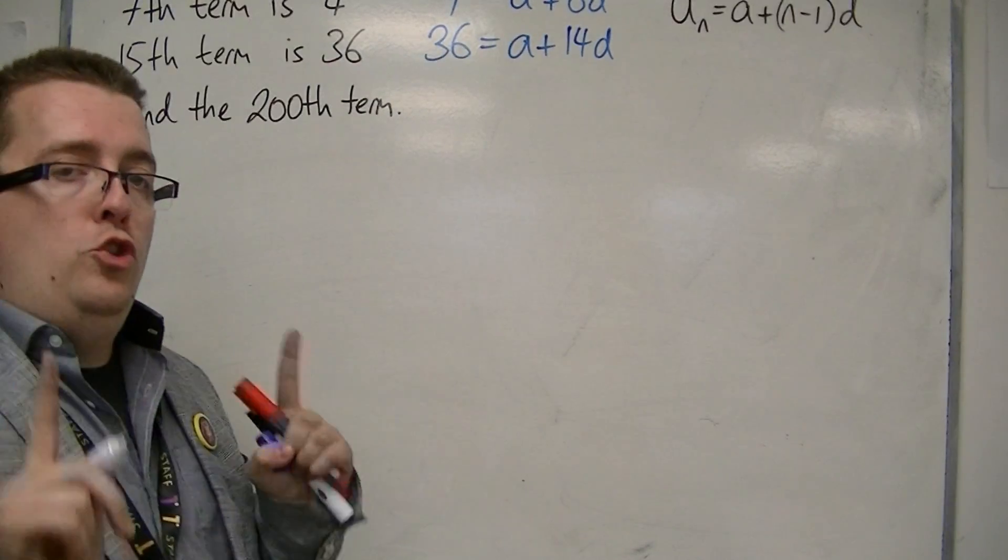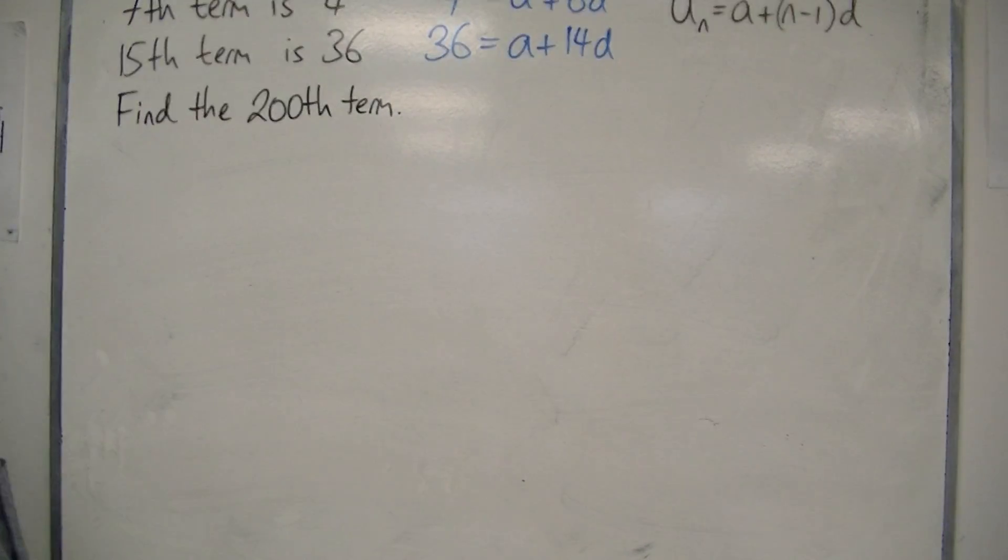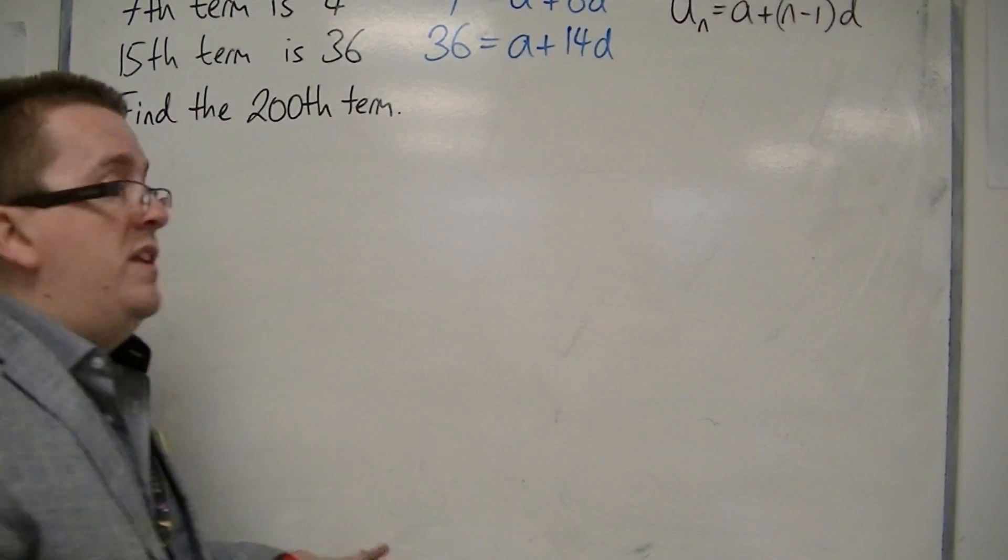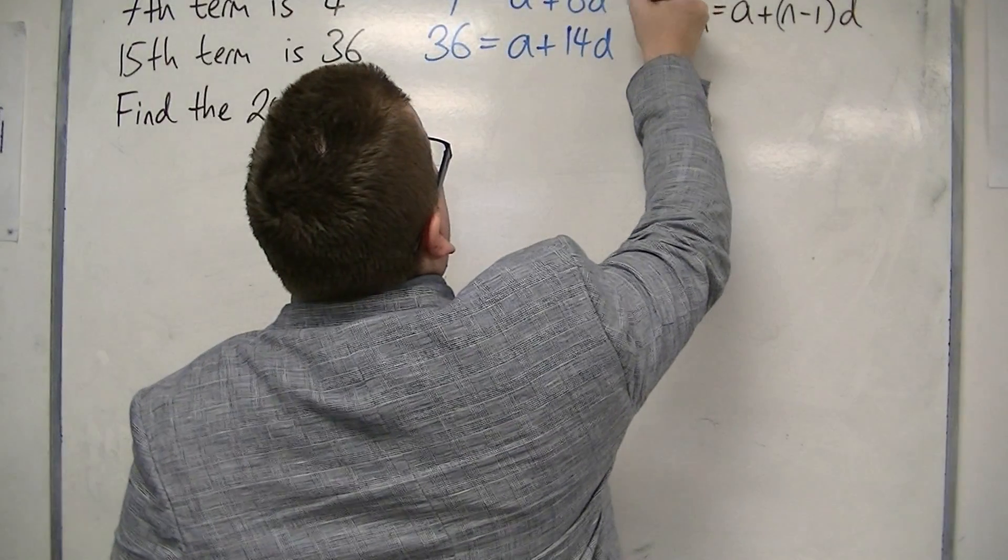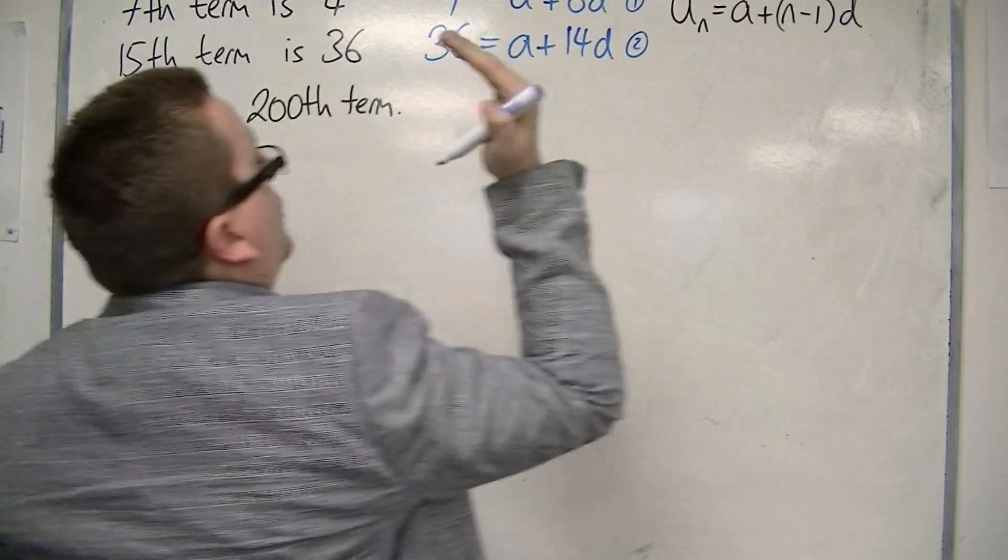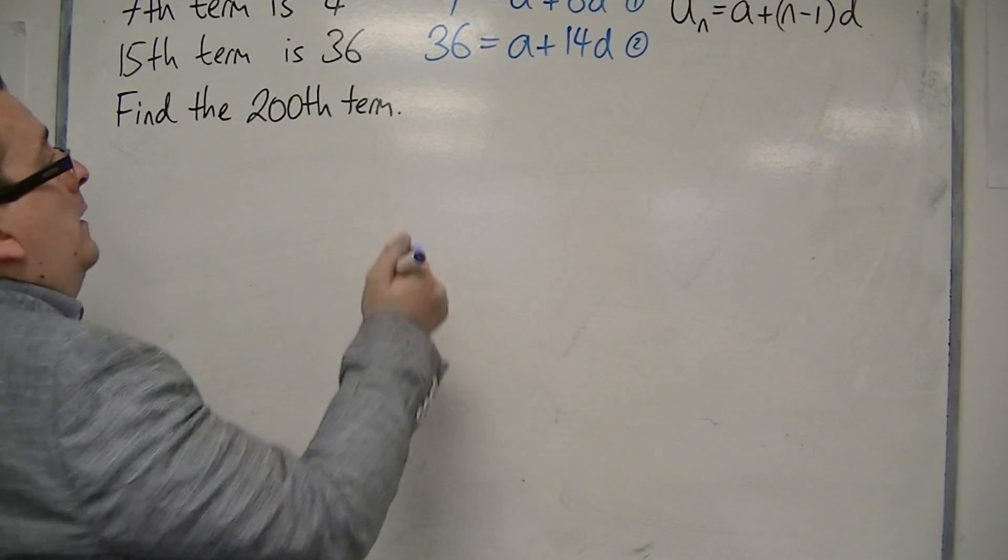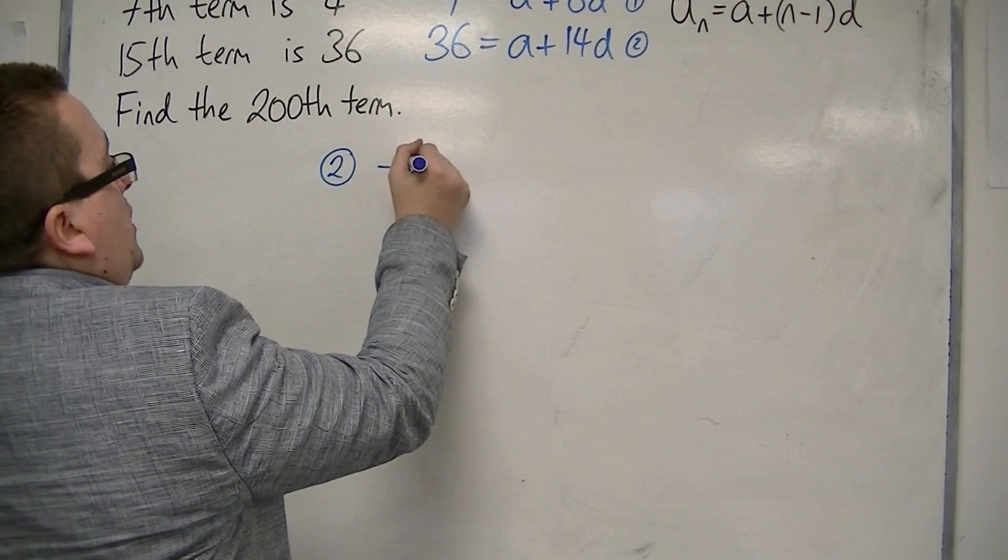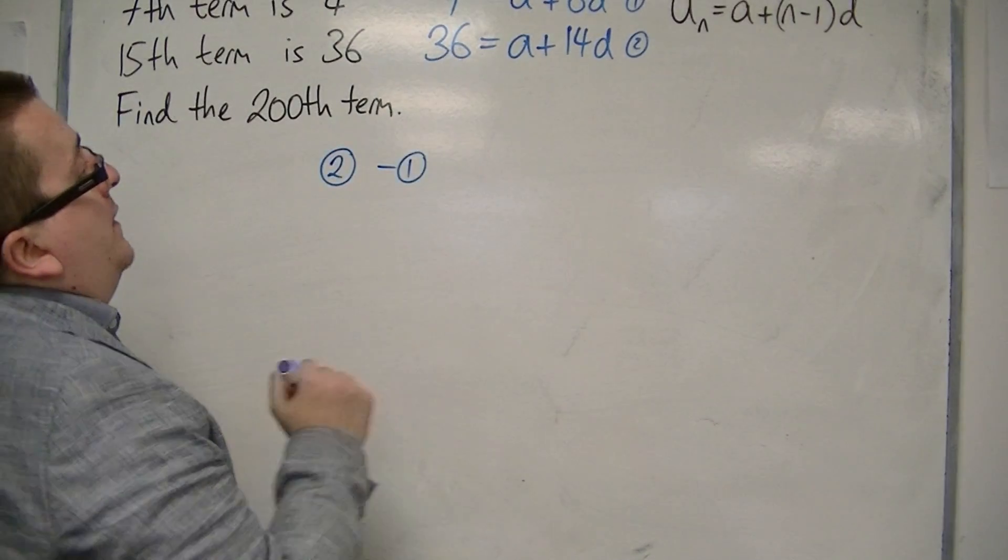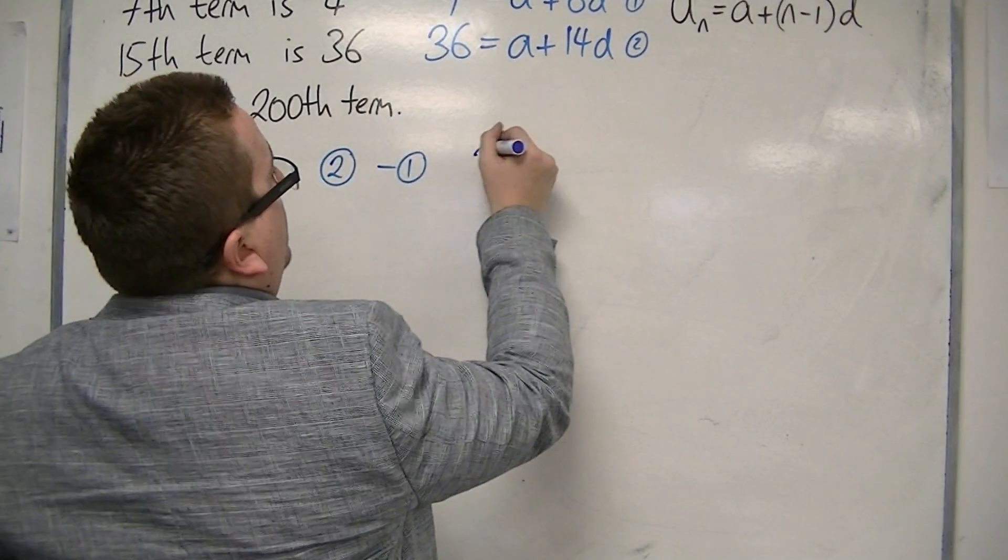So now, you should be cottoning on to the fact that we have two equations with two unknowns. So this is going to be simultaneous equations. Let's call the first one equation 1, the second one equation 2. So if we do equation 2 take away equation 1, then I've got 36 take away 4, that's 32.